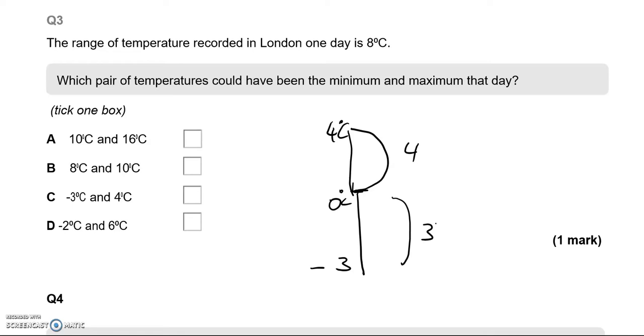And then we've got D which goes negative 2. So there's negative 2 and then we have 0 and then we have 6. So from negative 2 to 0, we've got 2 degrees. From 0 to 6, we've got 6. Add them together gives us 8. So D is the correct answer.